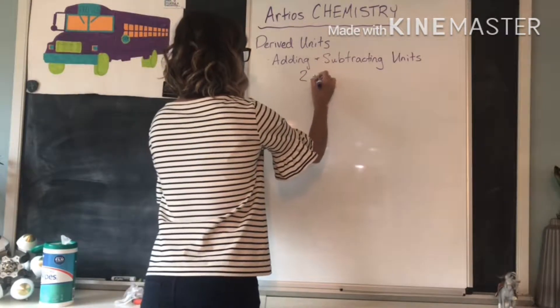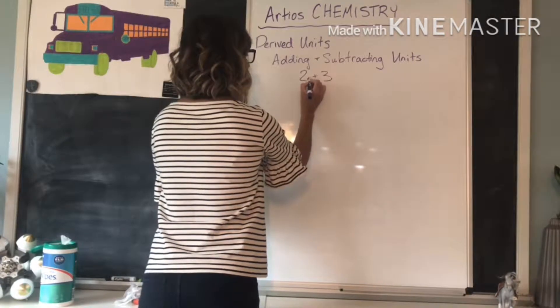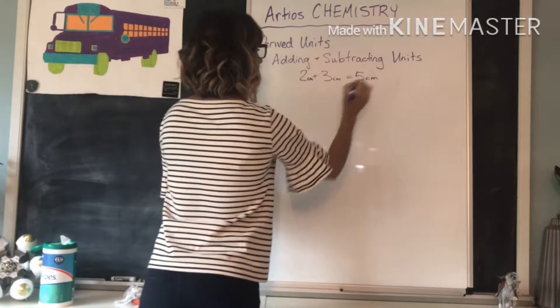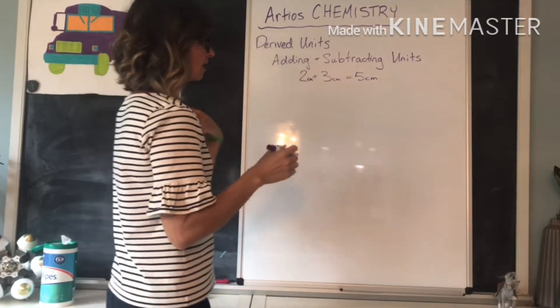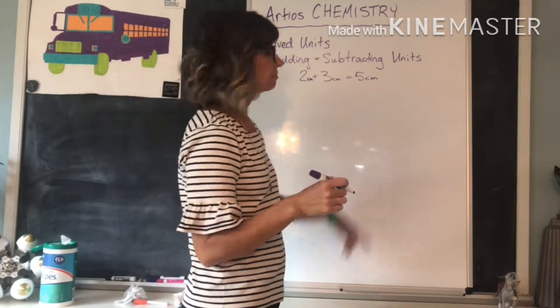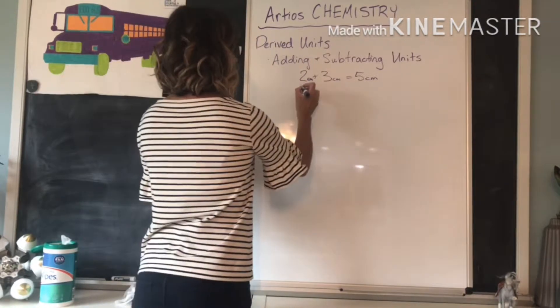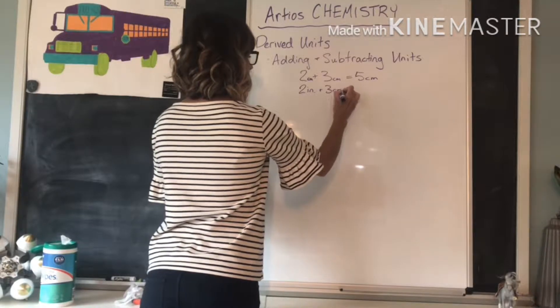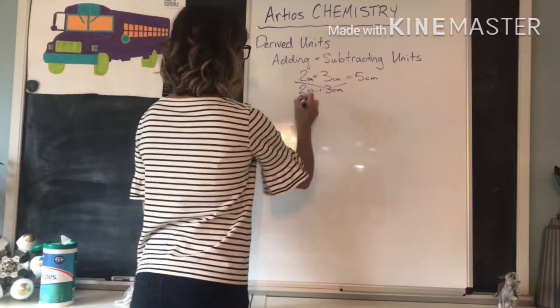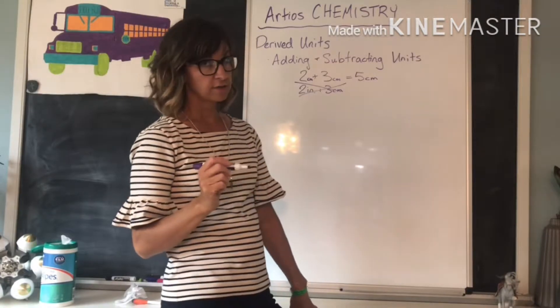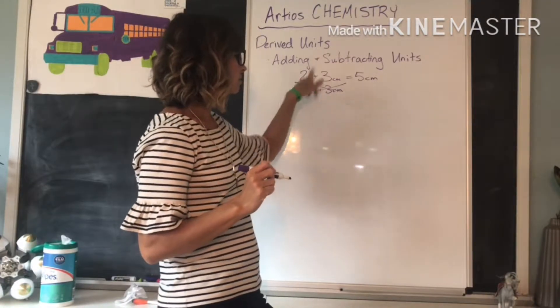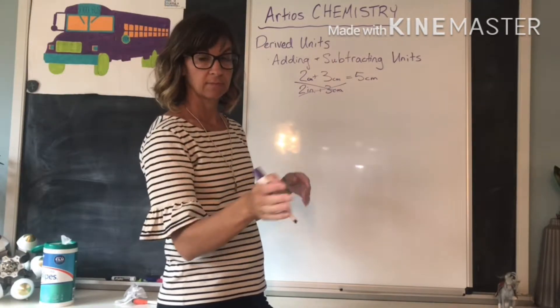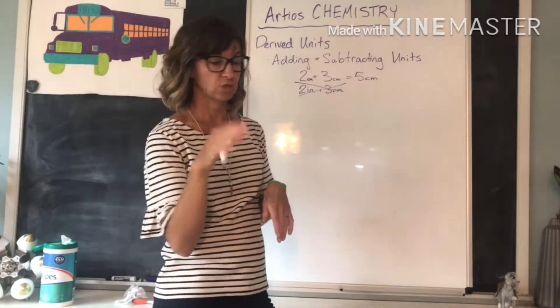So we can do 2 centimeters plus 3 centimeters equals 5 centimeters. So with adding and subtracting, the units don't change. And you can only add units that are the same. We could not do 2 inches plus 3 centimeters. That would not work. You would have to convert either inches to centimeters or convert centimeters to inches before you did your problem.